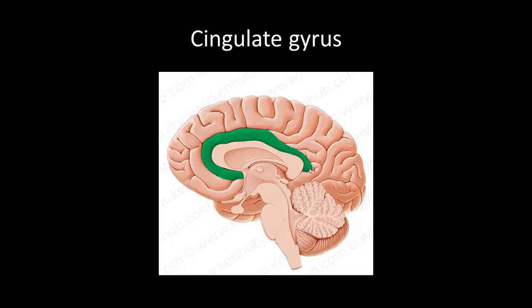The limbic system is involved with the five F's — a memory tool. That is feeding, fleeing, fighting, feeling, and fornicating. So the cingulate gyrus is part of the limbic system.